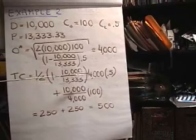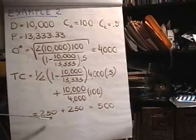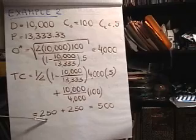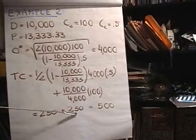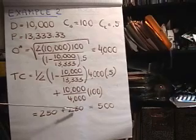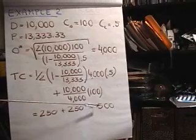Coming down here, the total cost multiplying through. Again, notice that the carrying cost is equal to the setup cost at optimality. So the total cost that we're minimizing is $500.